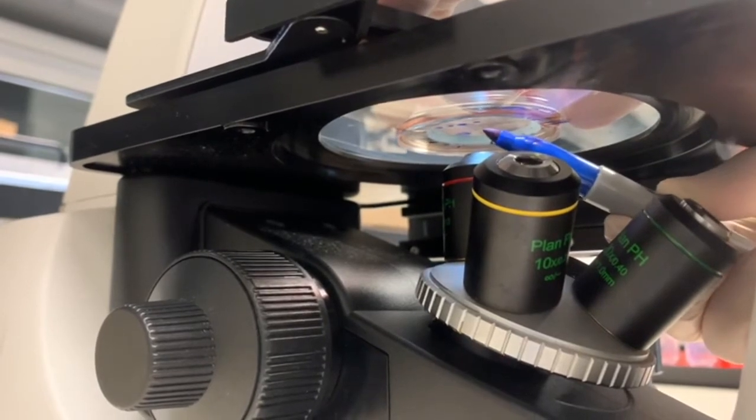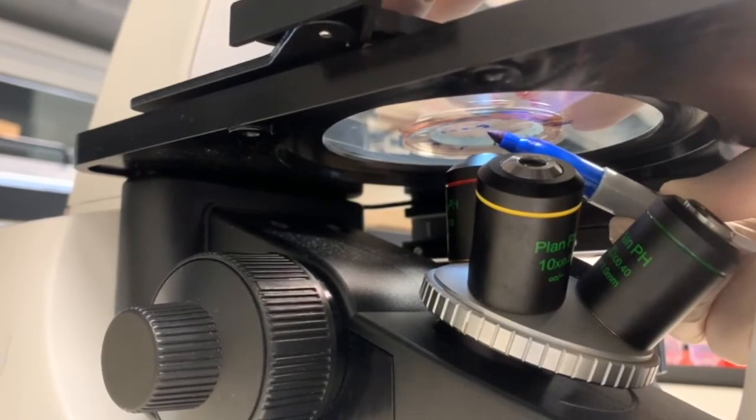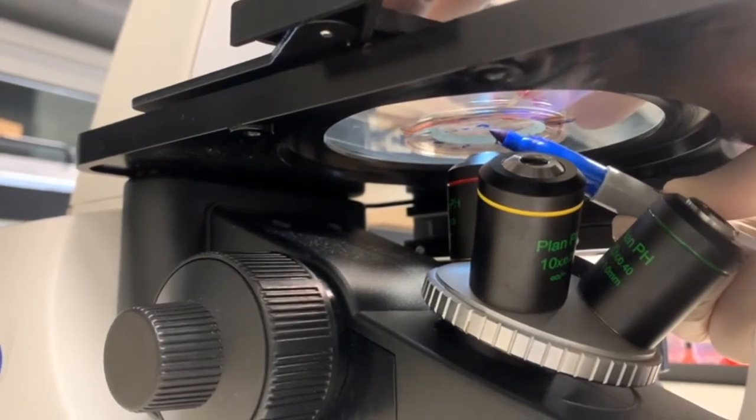Move the dish to change the field of view and keep marking the unwanted spontaneously differentiated regions until you cover as many as possible.